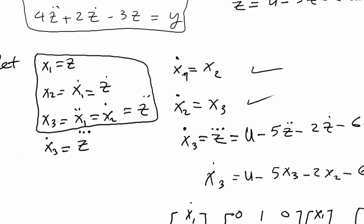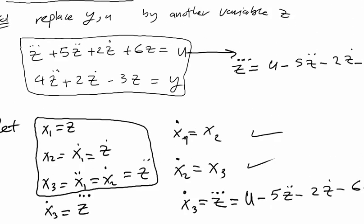From this equation, we have y equals 4z double dot, which is x3, so it's 4x3 plus 2z dot, which is x2, minus 3z, which is minus 3x1.